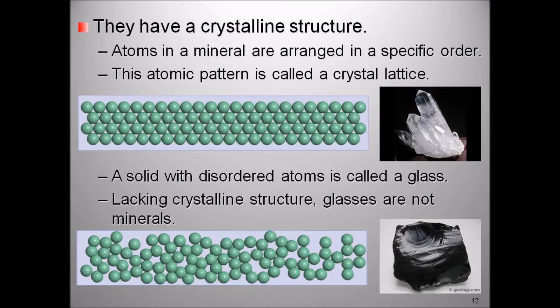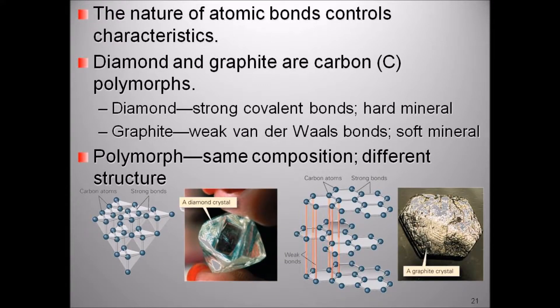Some minerals share the same chemical composition but have very different crystallography. For example, diamonds and graphite are pseudomorphs because both are composed of the single element carbon but with very different structure. A diamond, the hardest mineral, has strong covalent bonding and belongs to the crystal class hexoctahedral. Graphite, one of the softest minerals, is also composed entirely of carbon. It has weak Van der Waals bonding and belongs to the crystal class dihexagonal-dipyramidal.